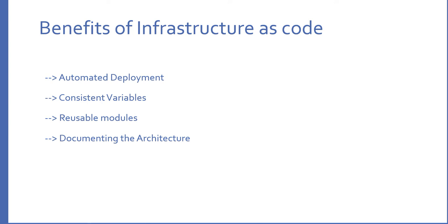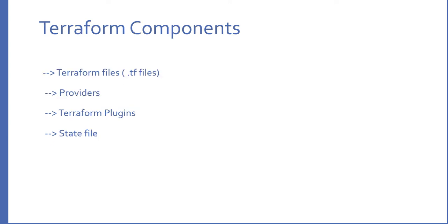The Terraform components we have are: Terraform files, providers, Terraform plugins, and state file. We'll discuss a few more components in upcoming videos. Terraform files are whatever files which end with the .tf extension — Terraform will read all files ending with .tf. We define all our infrastructure files in the .tf extension.